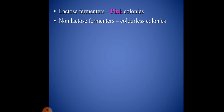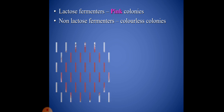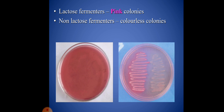If organisms produce lactose fermentation in MacConkey agar, they give pink-colored colonies. If organisms do not ferment lactose, the colonies will be colorless. This is the difference between LF (lactose fermenting) and non-LF colonies.